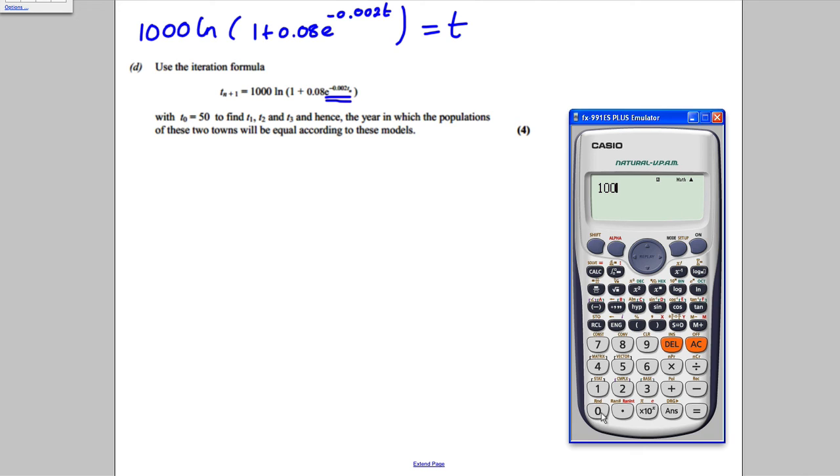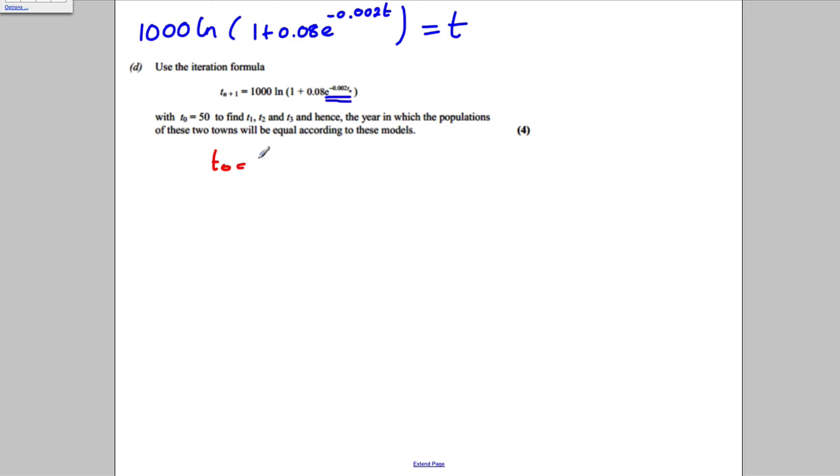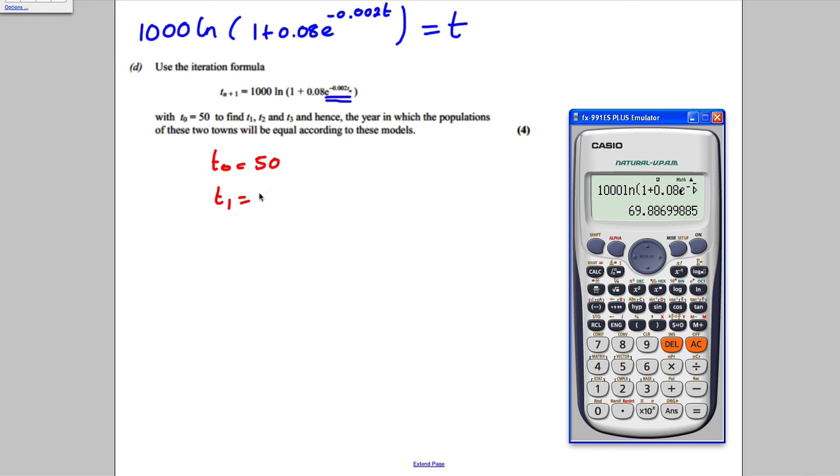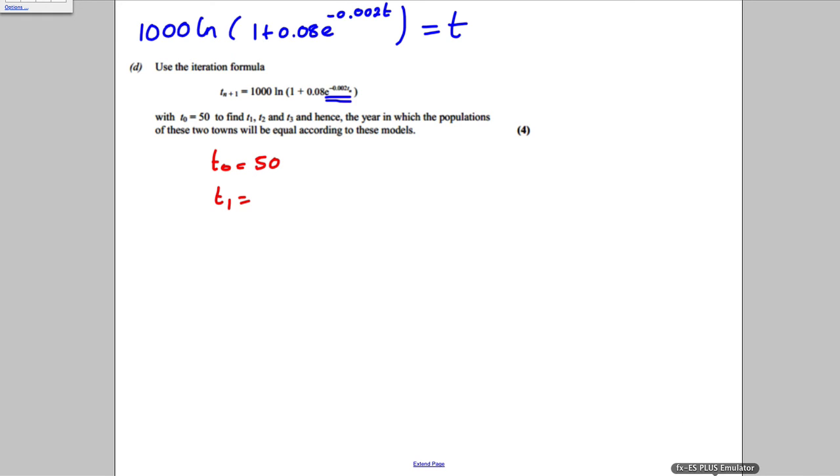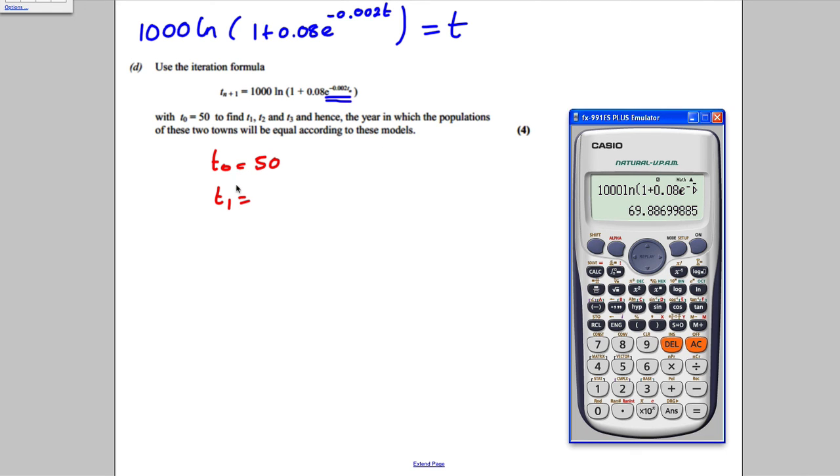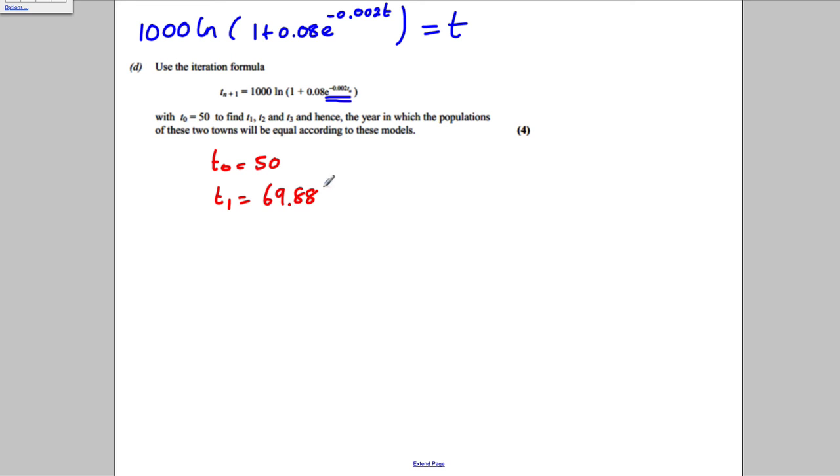Then type 1,000, the natural logarithm, one add 0.08, e to the power of negative 0.002 ants. Come out of that and close your brackets. Press equals and you get yourself 69.88. So if T0 is 50, T1 is equal to 69.98. Let's just do three significant figures. Well actually no, let's just do more and then we'll check again. 69.886, 69.886.